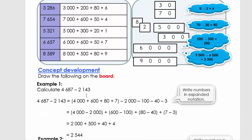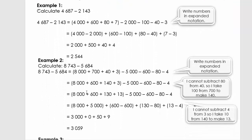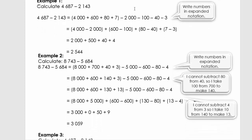Welcome back. Let's look at the first example. We're going to subtract 4,687 minus 2,143. We're going to write the first number in expanded notation: 4,000 plus 600 plus 80 plus 7, exactly like you did with your expanded notation at the top. Then we subtract 2,000, then 100, then 40, then 3 from the first number. We're going to group the thousands, hundreds, tens, and units together.